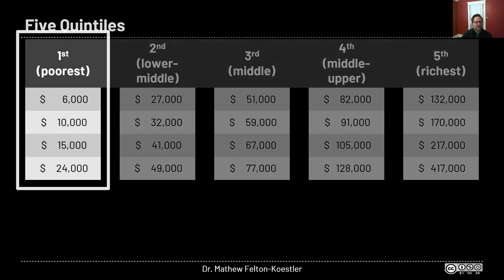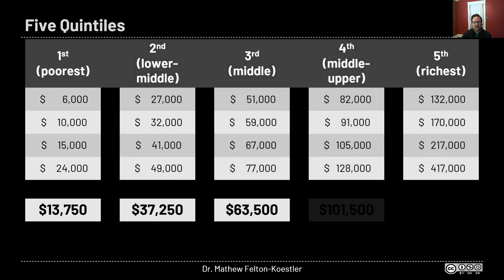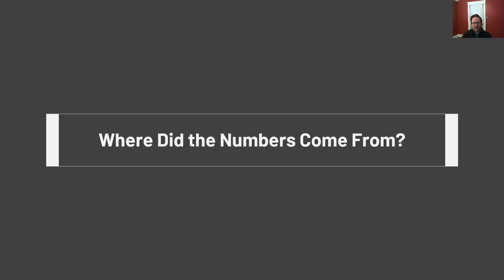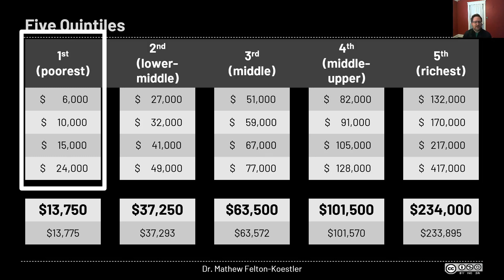We just looked at the poorest quintile and found its mean income was thirteen thousand seven hundred fifty dollars. We could do this same process for all five quintiles — for example, the middle fifth of U.S. households earns around sixty-three or sixty-four thousand dollars on average, and the richest top twenty percent are making over two hundred thousand dollars on average. I set my numbers up to be pretty close to what the actual Census Bureau reports as the average for each group.